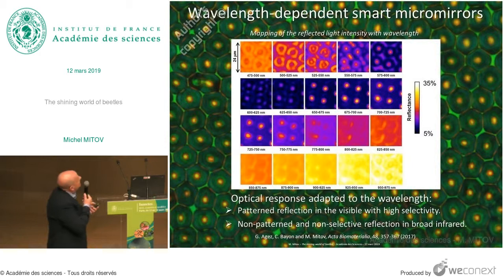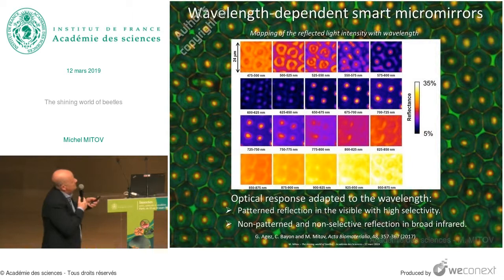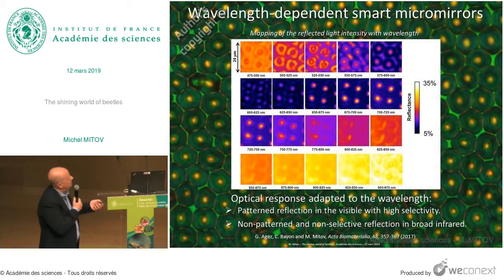So we can speak about wavelength-dependent smart micromirrors for these beetles, because the optical response is adapted to the wavelength — patterned reflection in the visible spectrum with high selectivity, and non-patterned, non-selective reflection in the broad infrared.